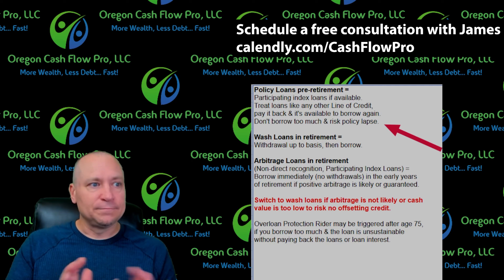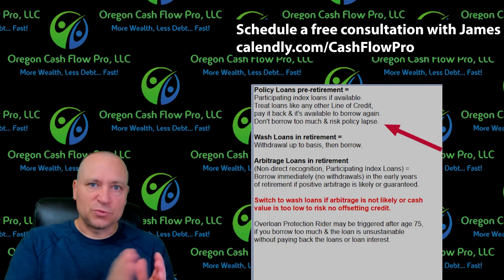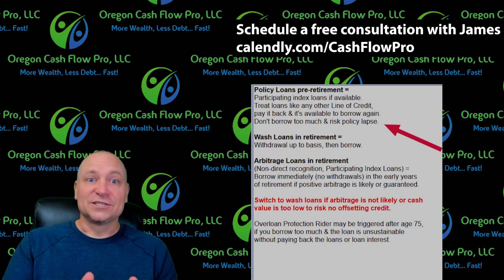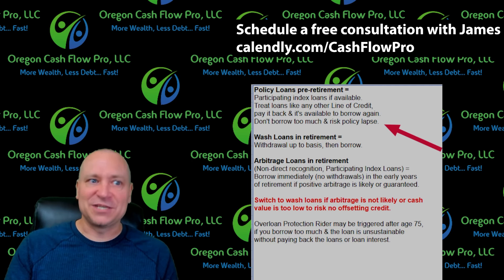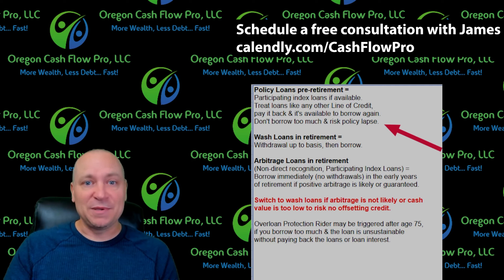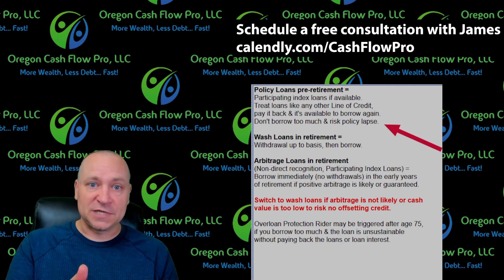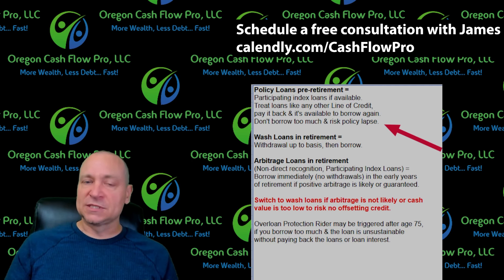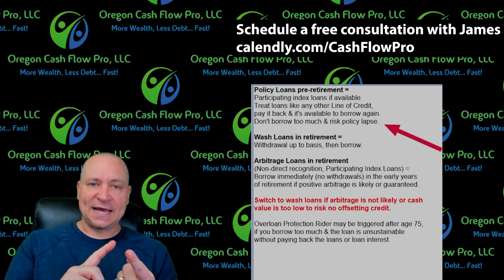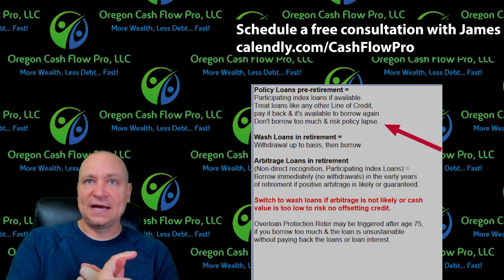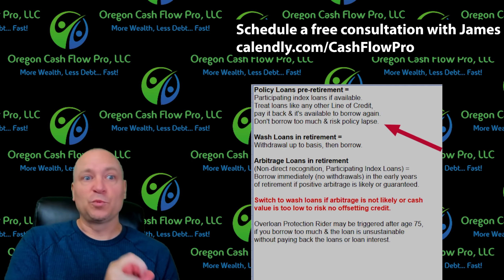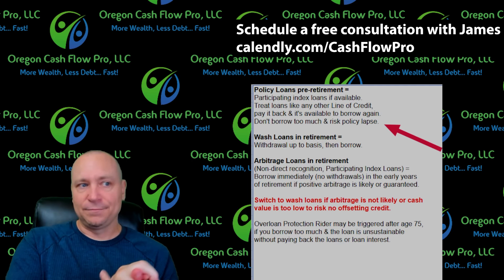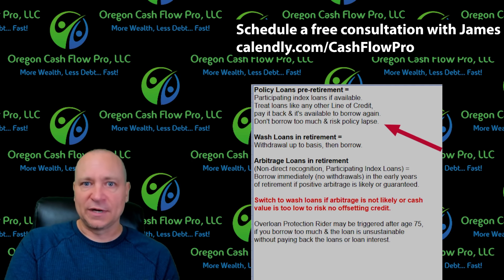If you're in a policy where you know you're not going to be getting arbitrage, we're probably just going to use a wash loan. If you're not sure, check with your agent — they should be able to help you understand what might be best for your situation and which type of policy you own. The types of policies we like to sell have the opportunity for a participating index loan against indexes that have historically performed well above five percent, and we're not paying more than five percent to borrow out of these.